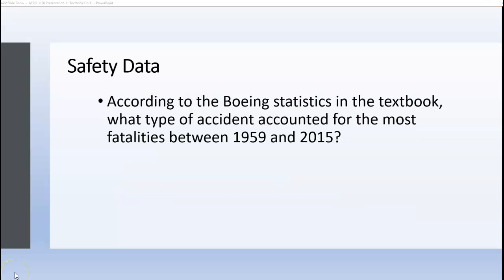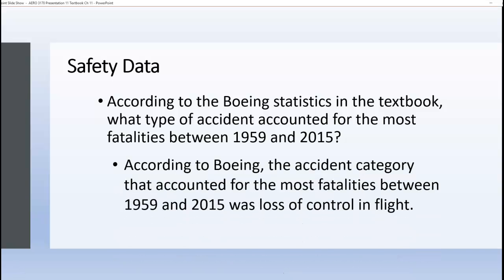In Chapter 11 of the textbook, there is safety data that Boeing published about fatalities between 1959 and 2015. These graphs show data about accident rates and fatalities by year, accidents and on-board fatalities by phase of flight, and accidents or fatalities by accident categories. According to these statistics, the accident category that accounted for the most fatalities between 1959 and 2015 was loss of control in flight.